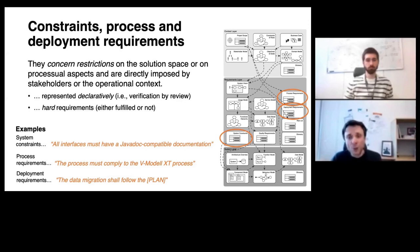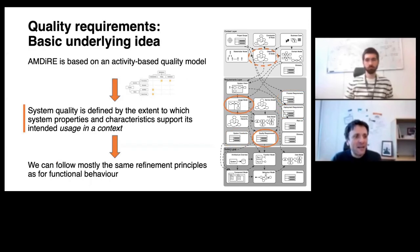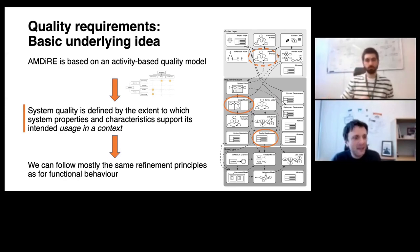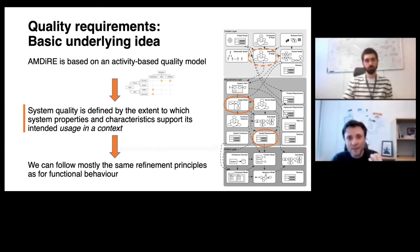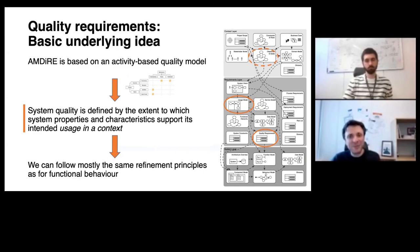Examples: a system requirement could state that all interfaces must have Java doc-compatible documentation; another that object-oriented constructs such as inheritance must not be used due to safety or legal restrictions in a particular industry. Process requirements could demand compliance to a certain software process model. Deployment requirements concern the actual deployment. These are non-negotiable restrictions on the way of working or the actual solution space that we must conform to.